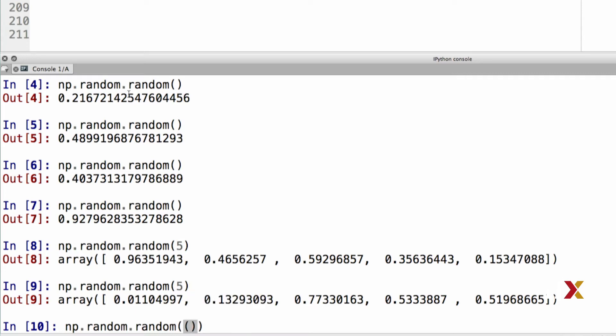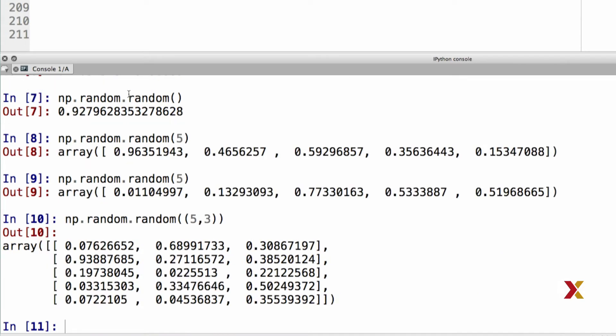The first argument is the number of rows, and the second argument is the number of columns. In this case, we've generated a table, a 2D table of random numbers with 5 rows and 3 columns.